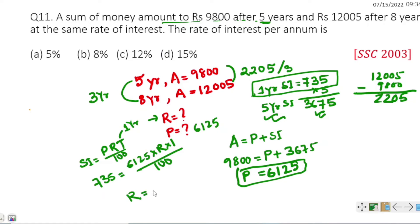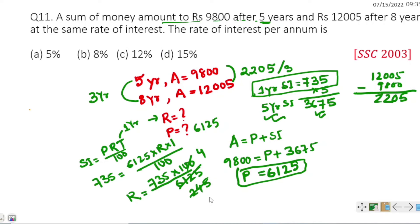Solving the equation: R = 735 × 100 divided by 6125. Simplifying: 73500 divided by 6125 equals 12. The answer is 12 percent.